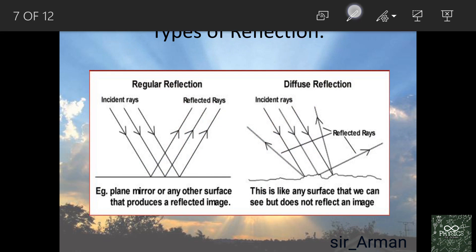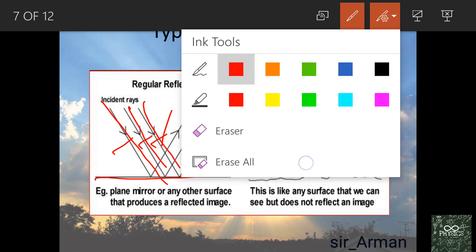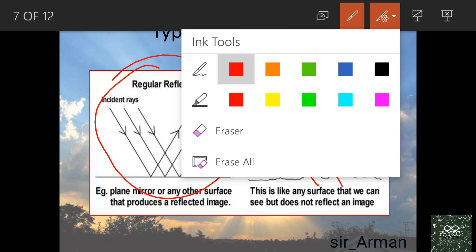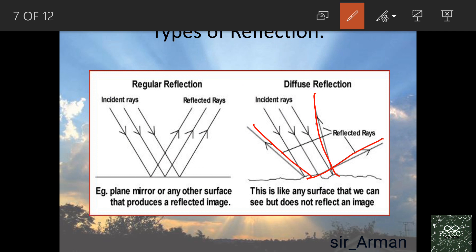There are two types of reflection. If the surface is like a plane mirror — completely polished and shining — parallel incoming rays reflect as parallel rays. This is called regular reflection. If the surface is rough, like a table, chair, or wall, parallel rays reflect in different directions. This is called diffused or irregular reflection.